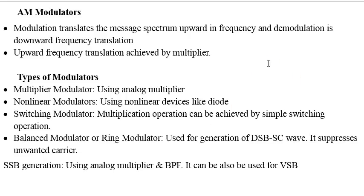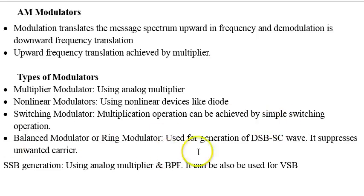AM modulators perform upward frequency translation of the message spectrum; demodulation does the reverse (downward translation). Upward frequency translation is achieved by a multiplier. Types of modulators include: multiplier modulators using analog multipliers, non-linear modulators using nonlinear devices, and switching modulators. The balanced modulator and ring modulator are quite common and are used for generation of DSB-SC waves, suppressing the unwanted carrier. SSB modulators use an analog multiplier with a bandpass filter.